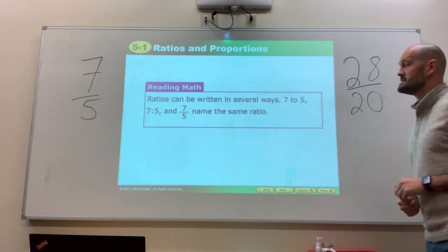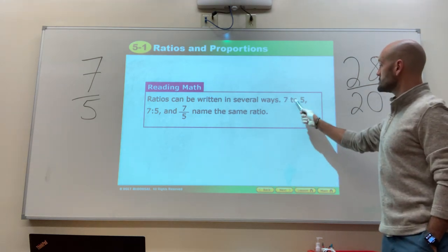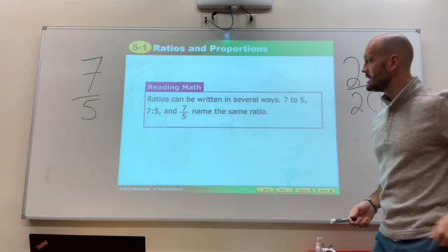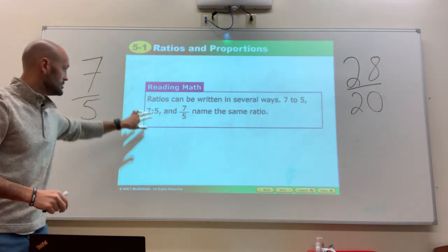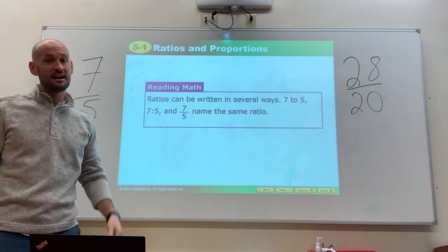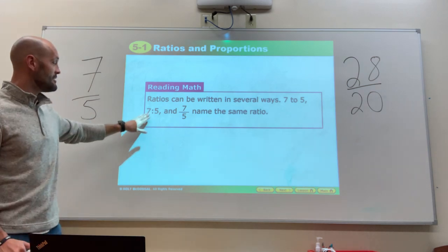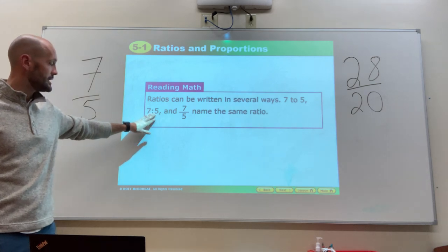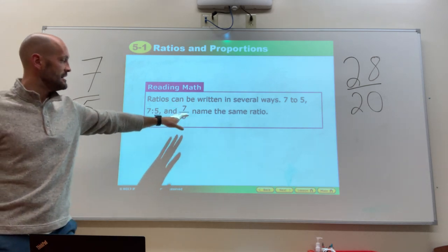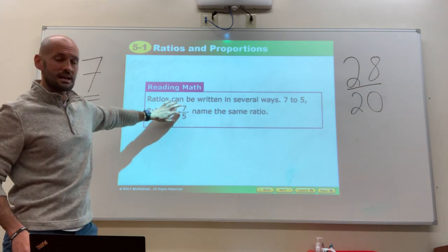So here's the three ways they can be written as ratios. Literally, it says 7 to 5, right? And this is actually read the exact same way. You see the little colon? You wouldn't say 7 colon 5. That's weird. Don't do that. This is 7 to 5 also, okay? And 7 over 5, name the same ratio. Now again, I want to make sure this looks like a fraction.